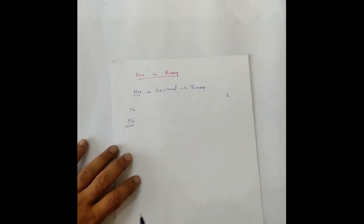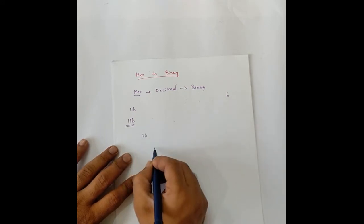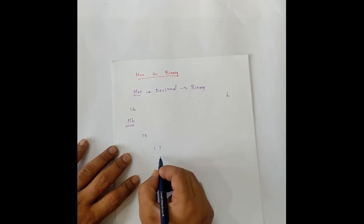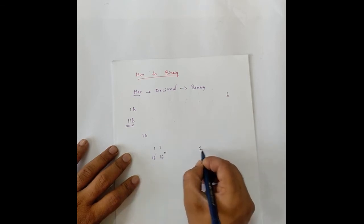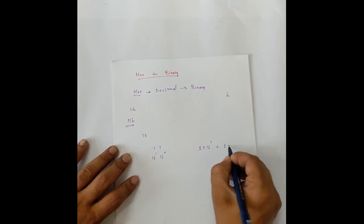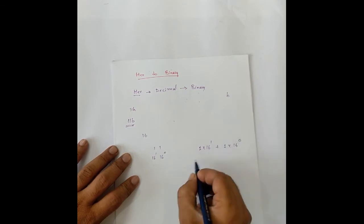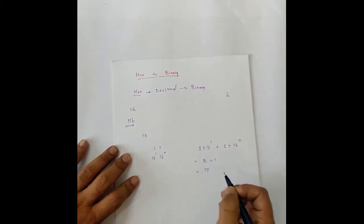Similarly, we'll do for hex. For hex, the base is 16. So, we'll take 11 and multiply each of them with the powers of 16. 16 to the power 0 and 16 to the power 1. So, it gives us 1 into 16 to the power 1 plus 1 into 16 to the power 0. That gives us 16 plus 1 equals to 17.